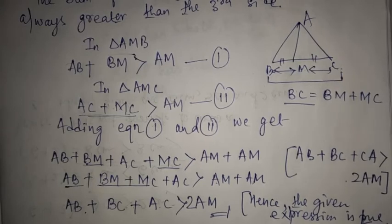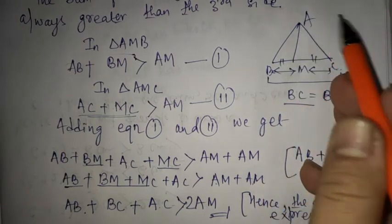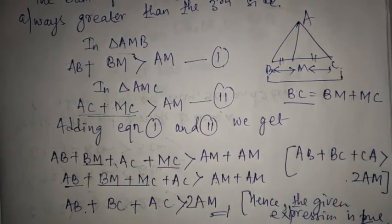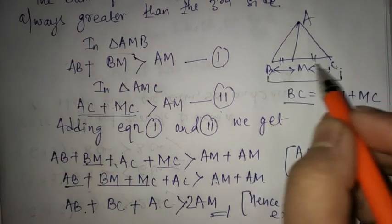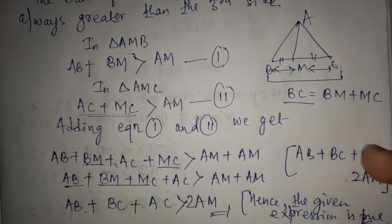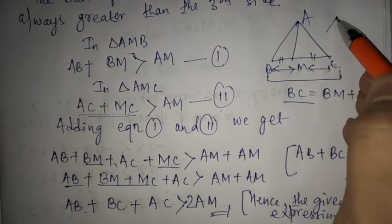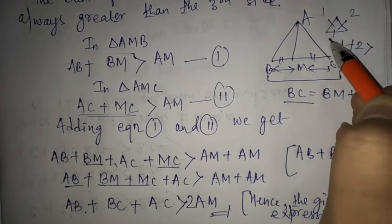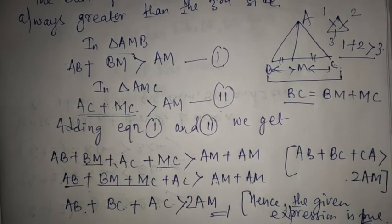This is very important and also easy to do. You have to break the triangle into two triangles first, then write expression 1 and expression 2, and add both equations. The key concept is that BC equals BM plus MC, and adding two sides of a triangle must give a result greater than the third side. So we solved the expression and proved the given statement is true.